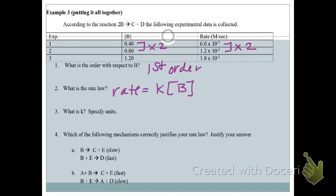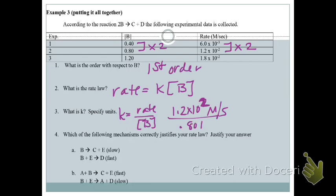Now calculate K. Using experiment two: K = rate ÷ [B] = (1.2 × 10⁻²  M/s) ÷ (0.8 M). The molarity units cancel, leaving units of s⁻¹. K = 0.015 s⁻¹. That is the rate constant. Remember, K is a rate constant.